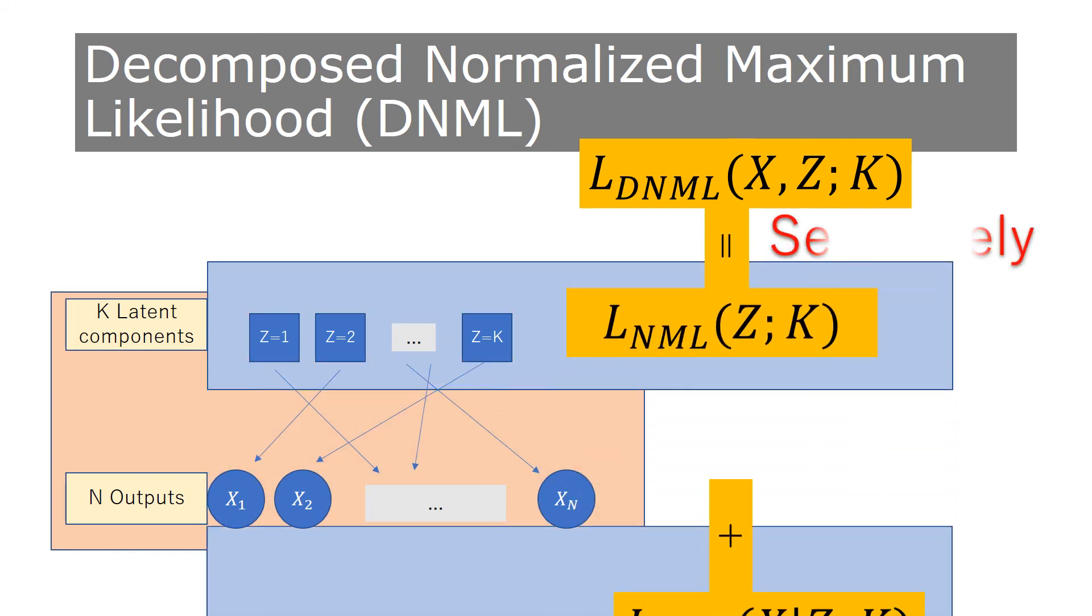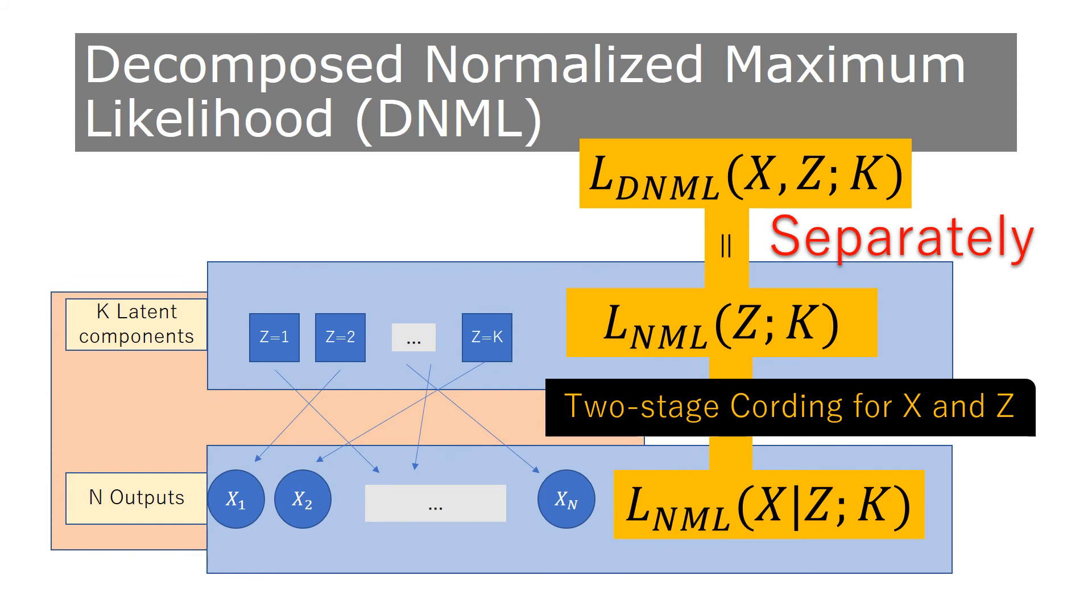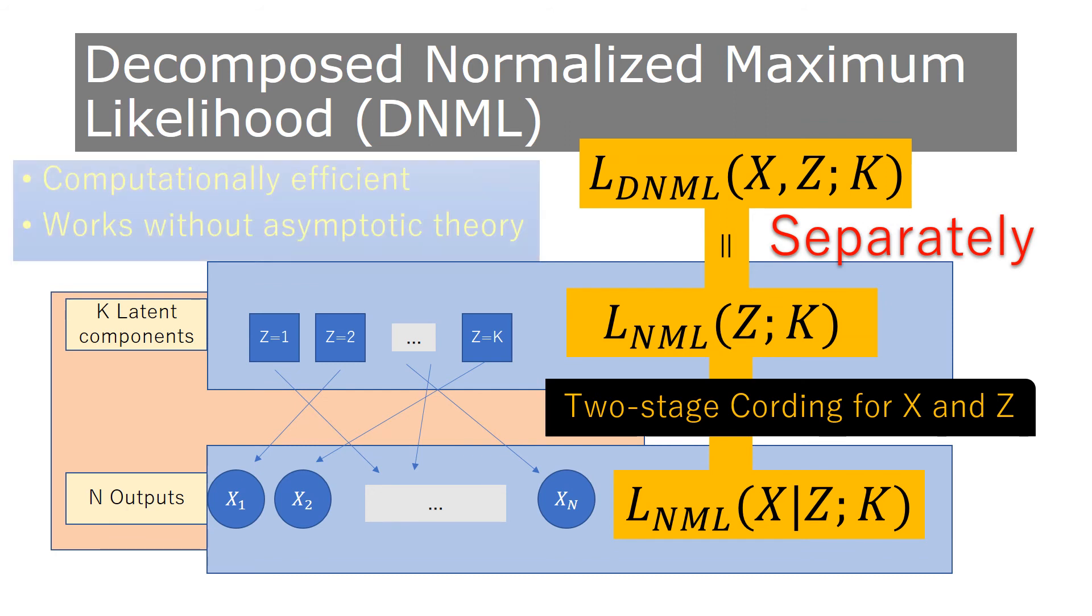The key idea is to calculate it as the sum of NML code length for data and that for latent variables separately, rather than simultaneously, using the two-stage encoding technique. Both of the code lengths are efficiently and exactly computed without any asymptotic theory.